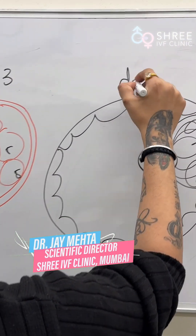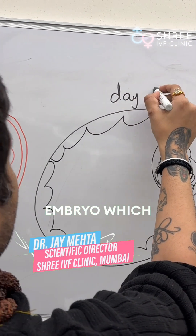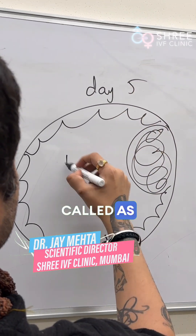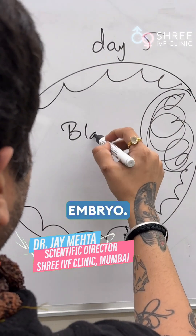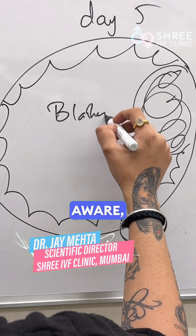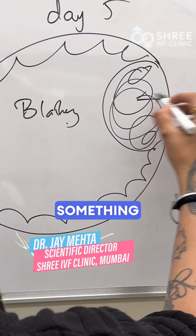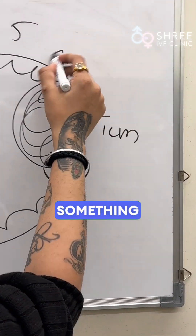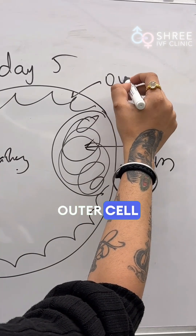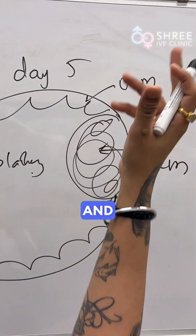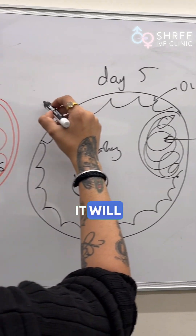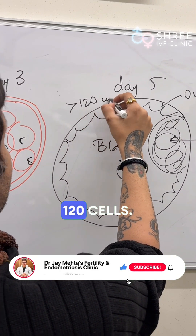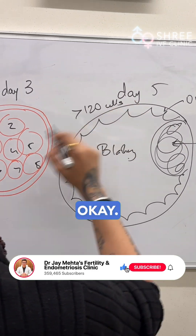This is your day 5 embryo, which is also called a blastocyst embryo as you are aware. It has something called an inner cell mass, and something called an outer cell mass. Remember, it will usually have more than 120 cells.